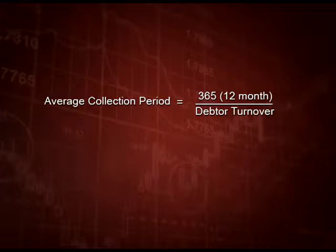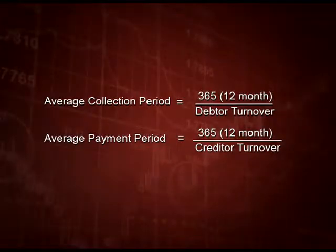There are 2 more formulas associated with the above ratios. First is average collection period, related to debtor turnover: 365 days or 12 months divided by debtor turnover. This gives you the time period for collection from debtors. The next is average payment period, related to credit turnover: 365 days or 12 months divided by credit turnover. In the collection part we deal with debtors, and in the payment part we deal with creditors.